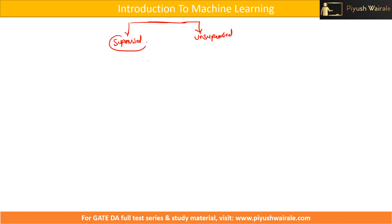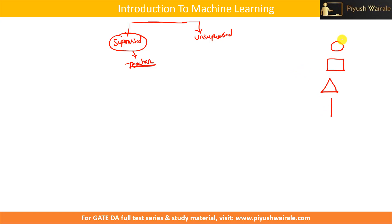So, what is supervised learning? As the name suggests, there is a supervisor. Supervisor means there is a teacher. Suppose I want to know this shape is a circle, this shape is called a square, this is a line. How do I come to know whether this is a circle, this is a square, this is a triangle, or this is a line? Because our teacher has trained us to understand this type of shape.